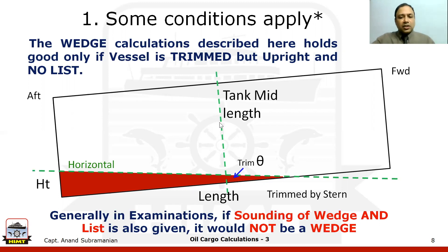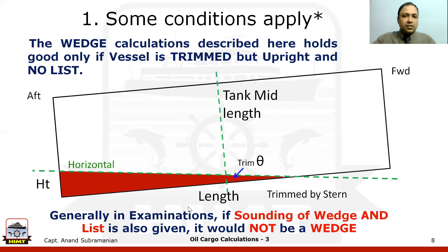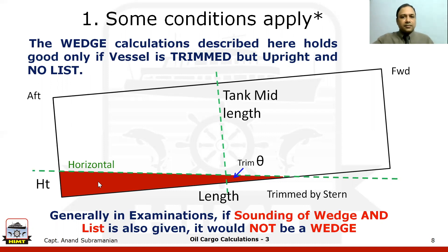In the examination, if the sounding of a wedge and also a list is given, generally it will not be a wedge problem. You can skip the wedge calculations and go ahead and use the normal calculations to find out the GOV, TOV, the volume of the free water, and continue with your calculation.